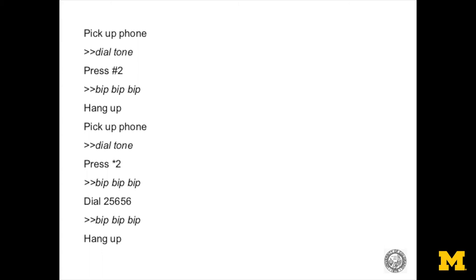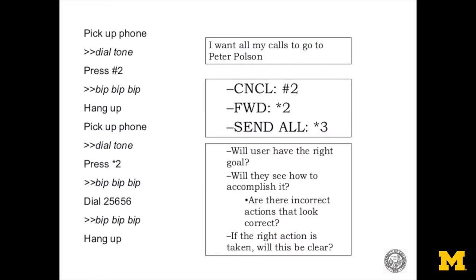Here's what I have to do to actually perform that operation. The things with the little angle symbols are indicating audio responses the phone makes. So I pick up the phone and I've got a dial tone. What I'm supposed to do is press pound sign 2. Then if I do that, I get a bip-bip-bip tone. Then I need to hang up. Then I need to pick up the phone again — I get the dial tone again. Then I press star 2 and get another bip-bip-bip. Then I dial the indicated number, get a confirmation, then hang up.